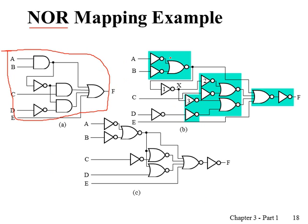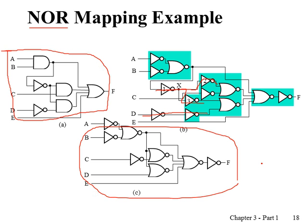Suppose the resulting circuit uses NOR-only implementation. For each AND gate, replace it with NOR with inverted inputs. For the OR gate, replace it with NOR with an inverter. Once this is done, on the same line if you have two inverters in a row, cancel them out. If there is a single inverter, keep it. Where there is a fan-out point, move the inverter after the fan-out, duplicate it, then cancel: one-and-two cancel, and one-and-three cancel, giving the resulting circuit. That is how we do mapping with NOR gates.